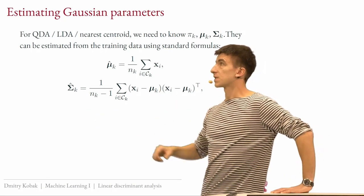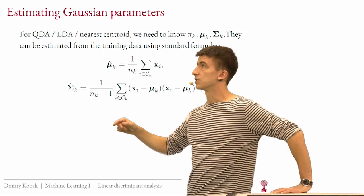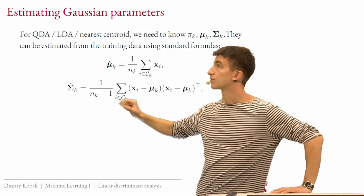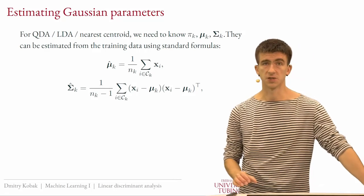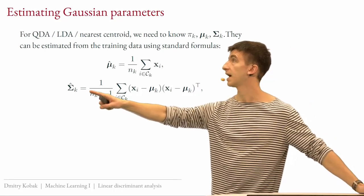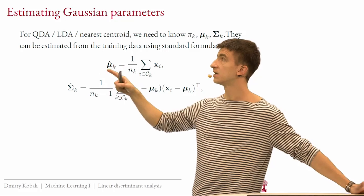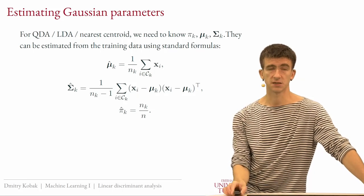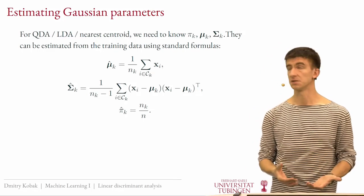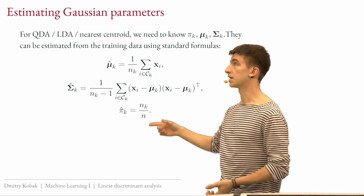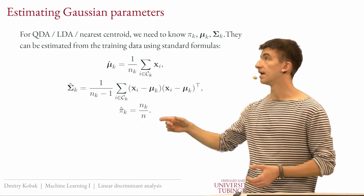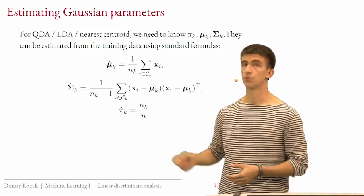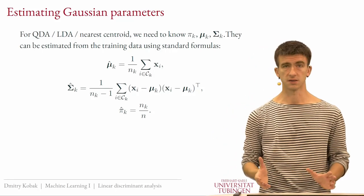Then you use these estimated values — denoted with a hat — in all the formulas to compute predictions on test data. The prior is the simplest to estimate: if your training set has 1000 points with 600 from class one and 400 from class two, you estimate π̂_1 = 0.6 and π̂_2 = 0.4.